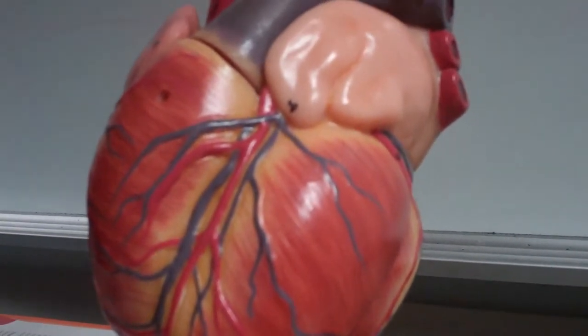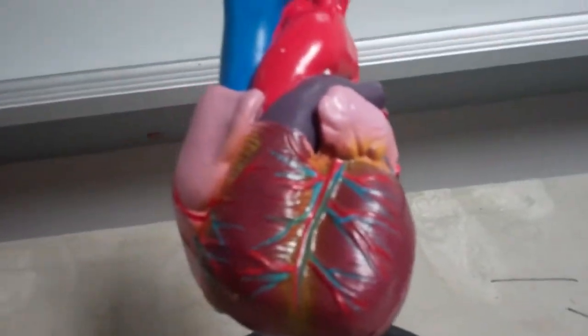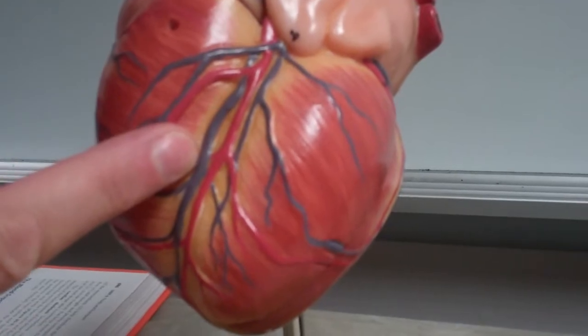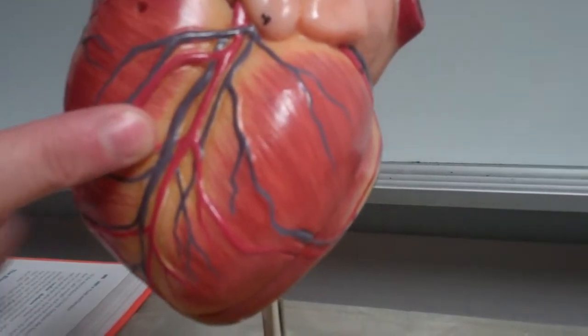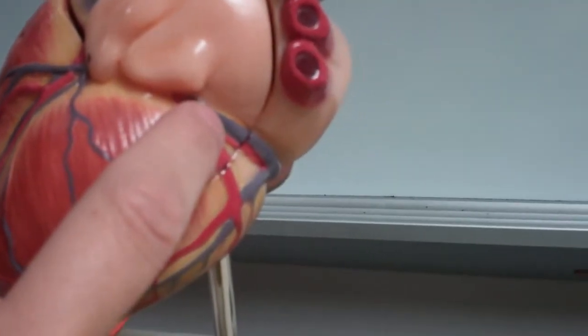Now, our left coronary is going to immediately fork right in this region into our anterior interventricular artery, and then on the side, it's going to be the circumflex artery.